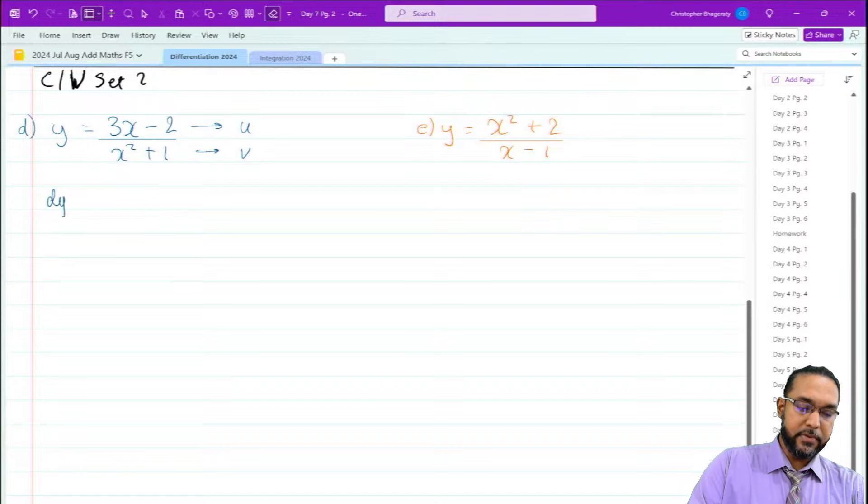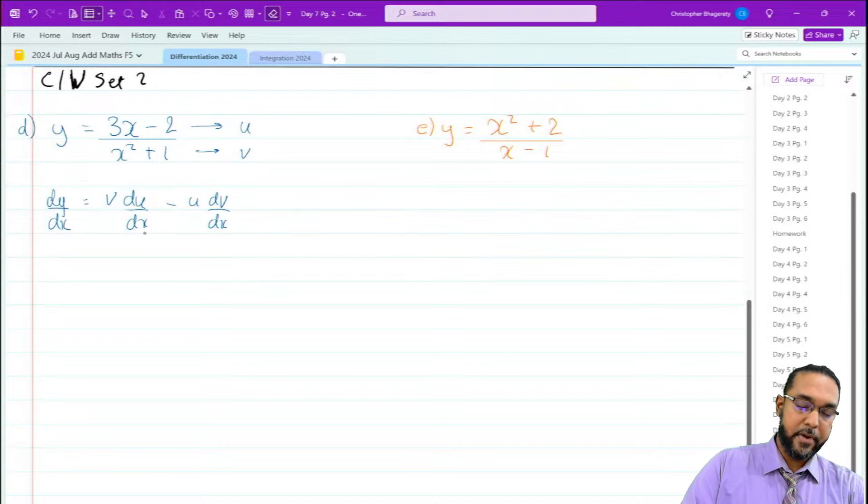To find the derivative of y with respect to x in this case, we're going to use the quotient rule. So v times du/dx minus u times dv/dx, all divided by v squared.